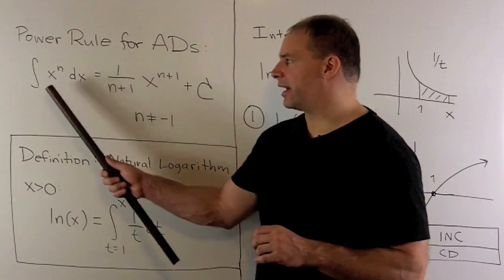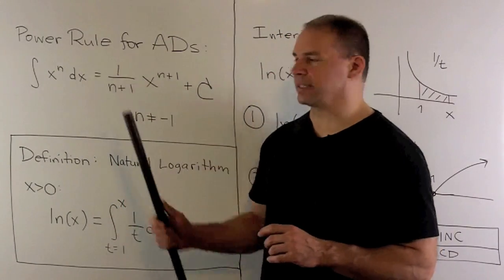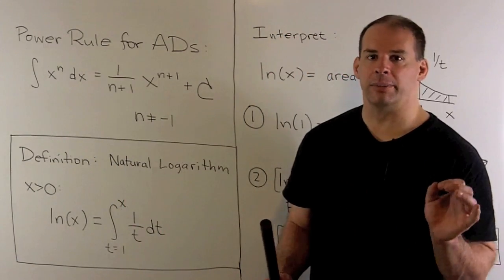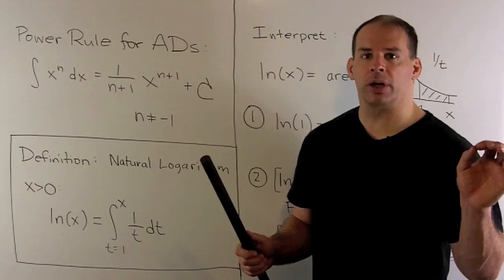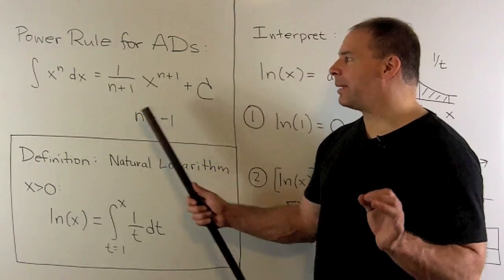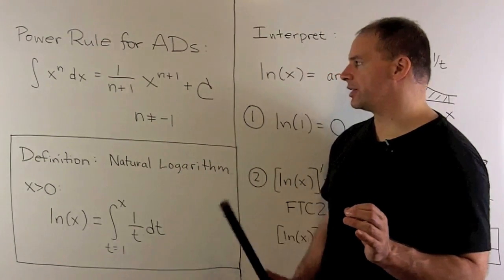This states the indefinite integral of x to the n with respect to x is given by: you take your x, add 1 to the exponent, then you divide by n plus 1, and then add your constant of integration.